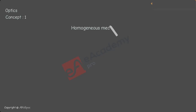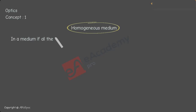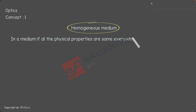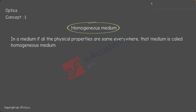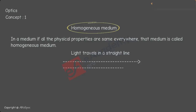The next topic is homogeneous medium. Previously we observed different types of substances such as transparent, translucent, and opaque substances. Now we will discuss different types of mediums. In a homogeneous medium, all the physical properties are the same everywhere. In a homogeneous medium, light can travel in a straight line.